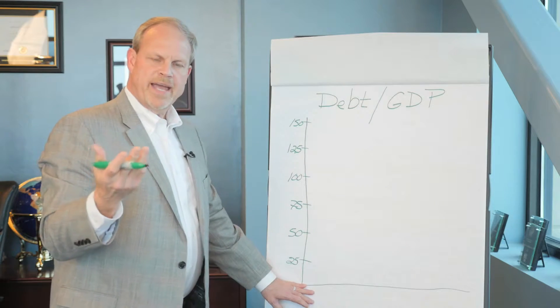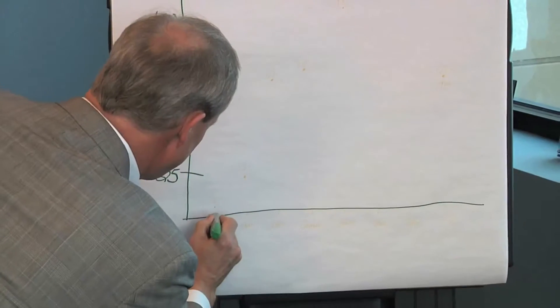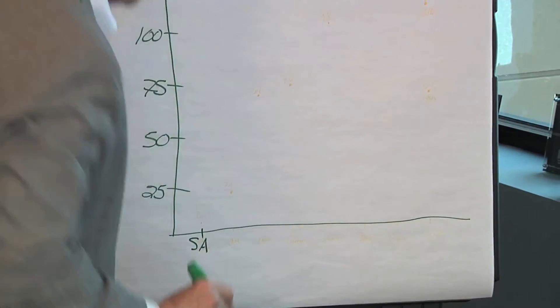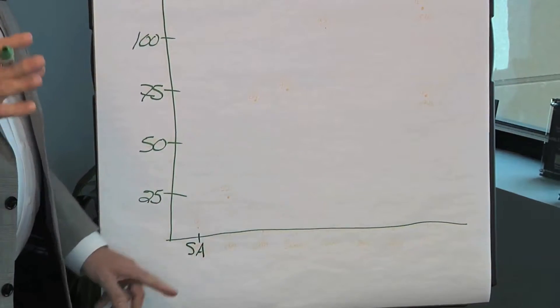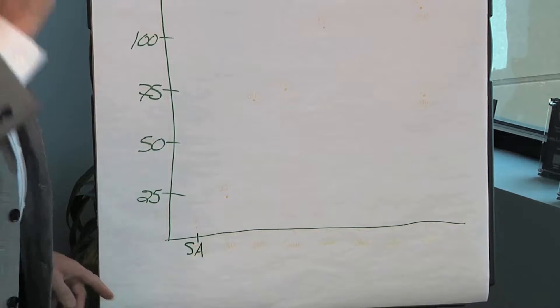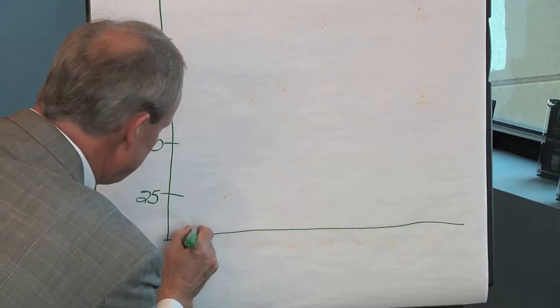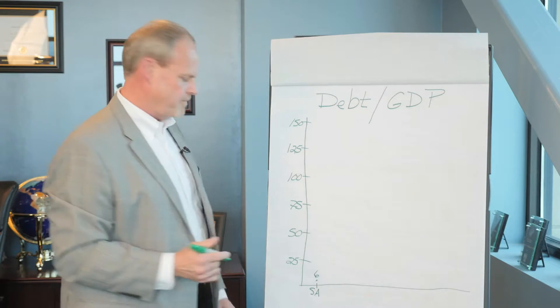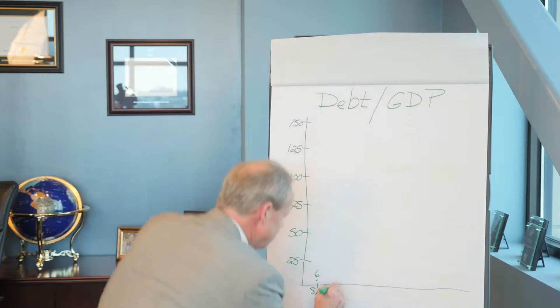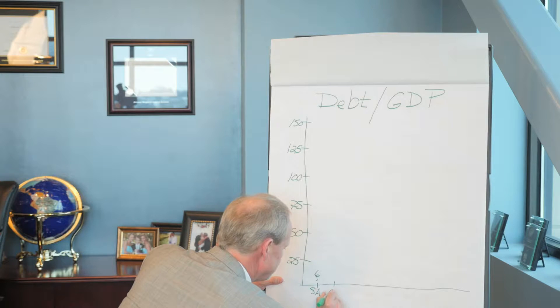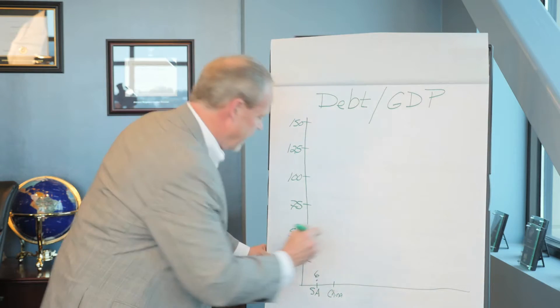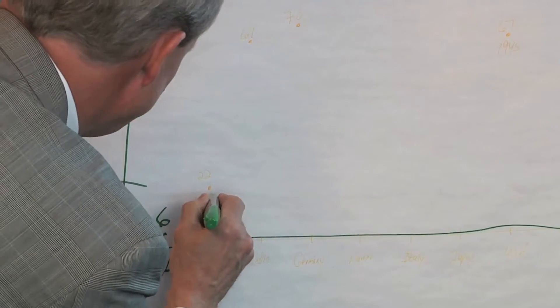The first country that we'll look at is Saudi Arabia. Saudi Arabia's debt to GDP is very low at 6%. The next one is China, and China's debt to GDP is at 22%.